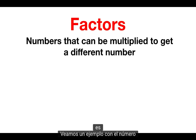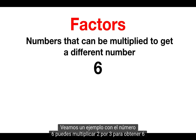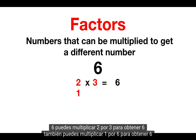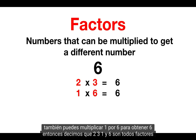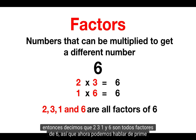Let's look at an example with the number 6. You can multiply 2 times 3 to get 6. You could also multiply 1 times 6 to get 6. So we say that 2, 3, 1, and 6 are all factors of 6.